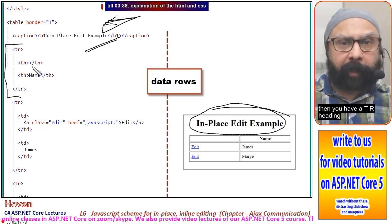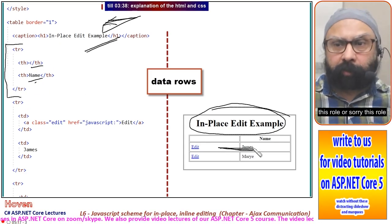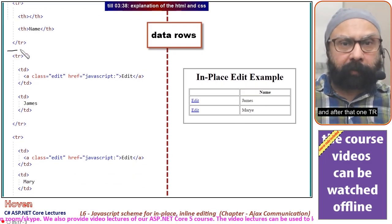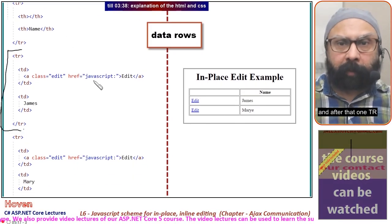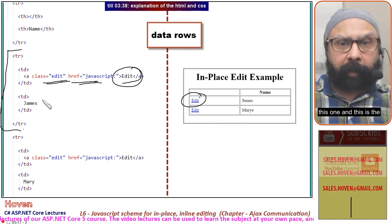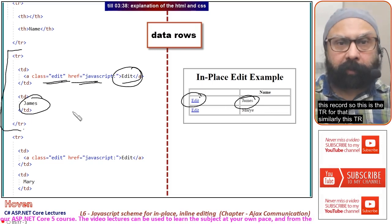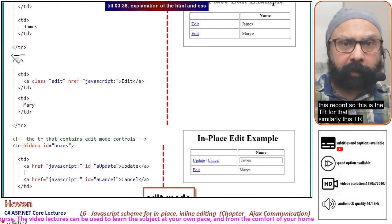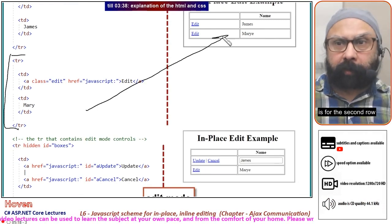Then you have a tr heading row. After that, one tr with the anchor for edit. This is the first record. Similarly, this tr is for the second row.